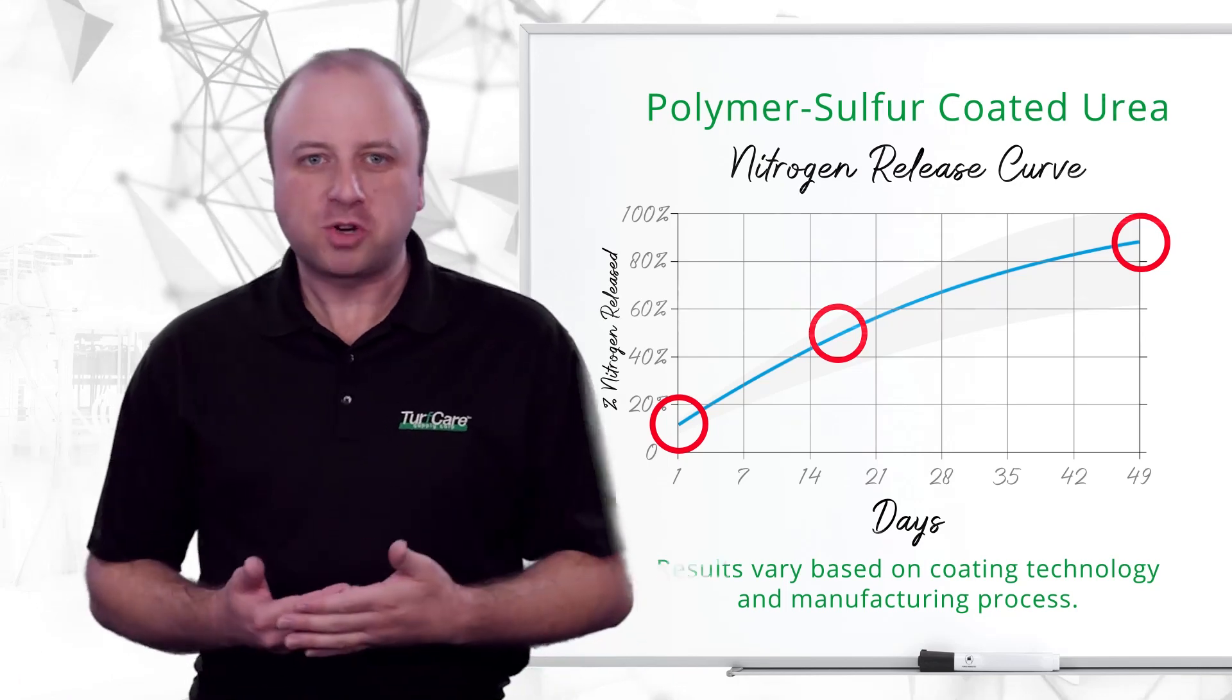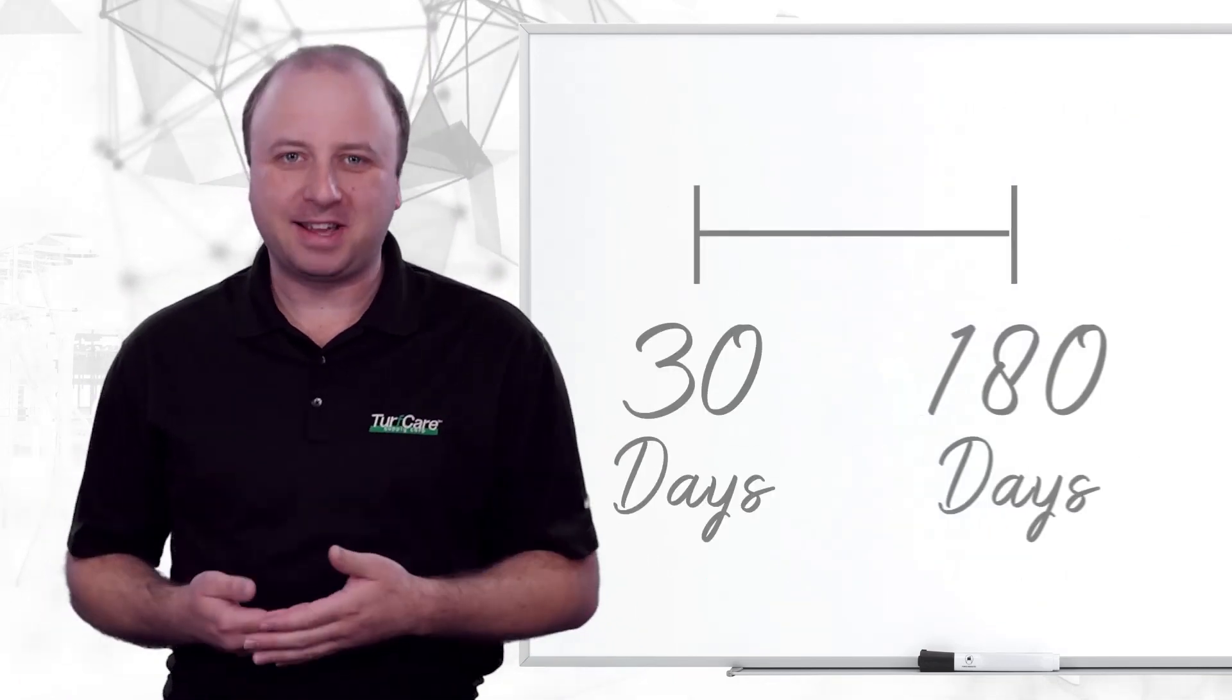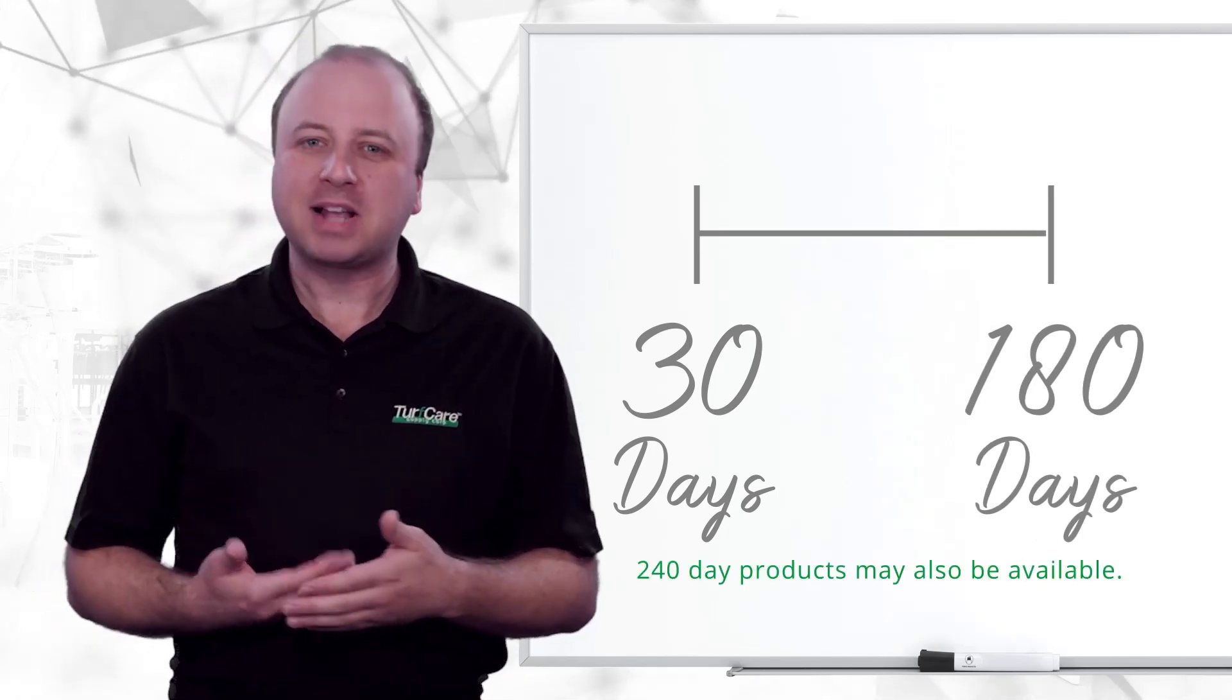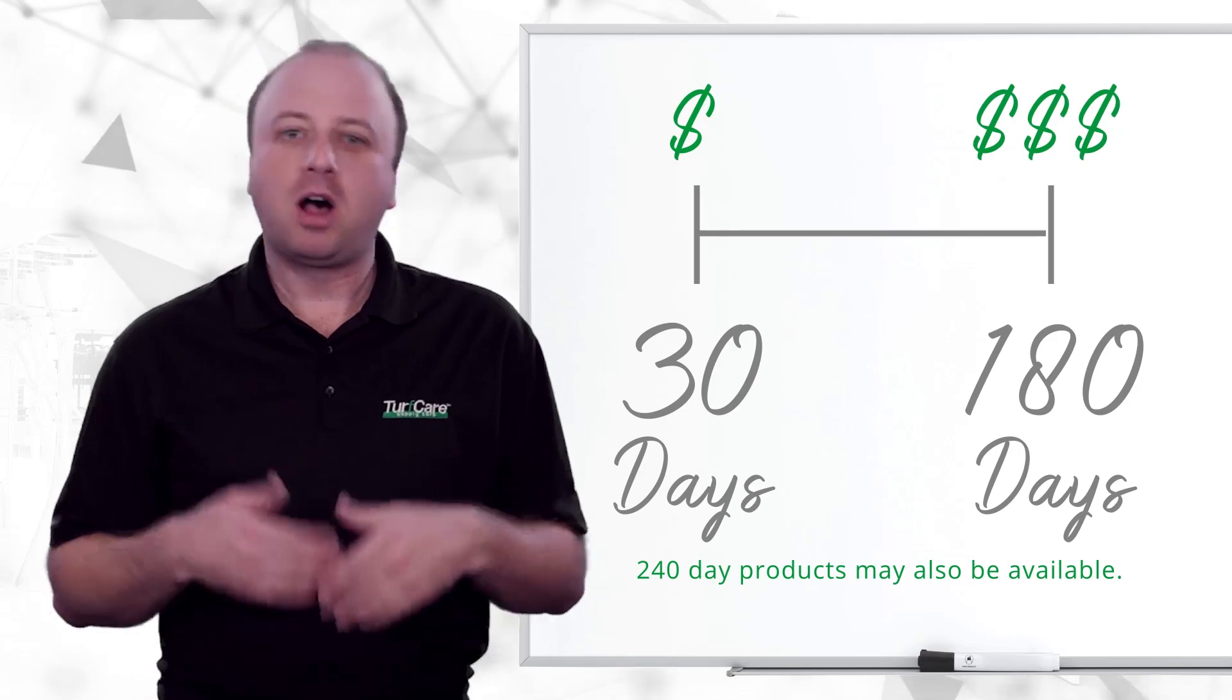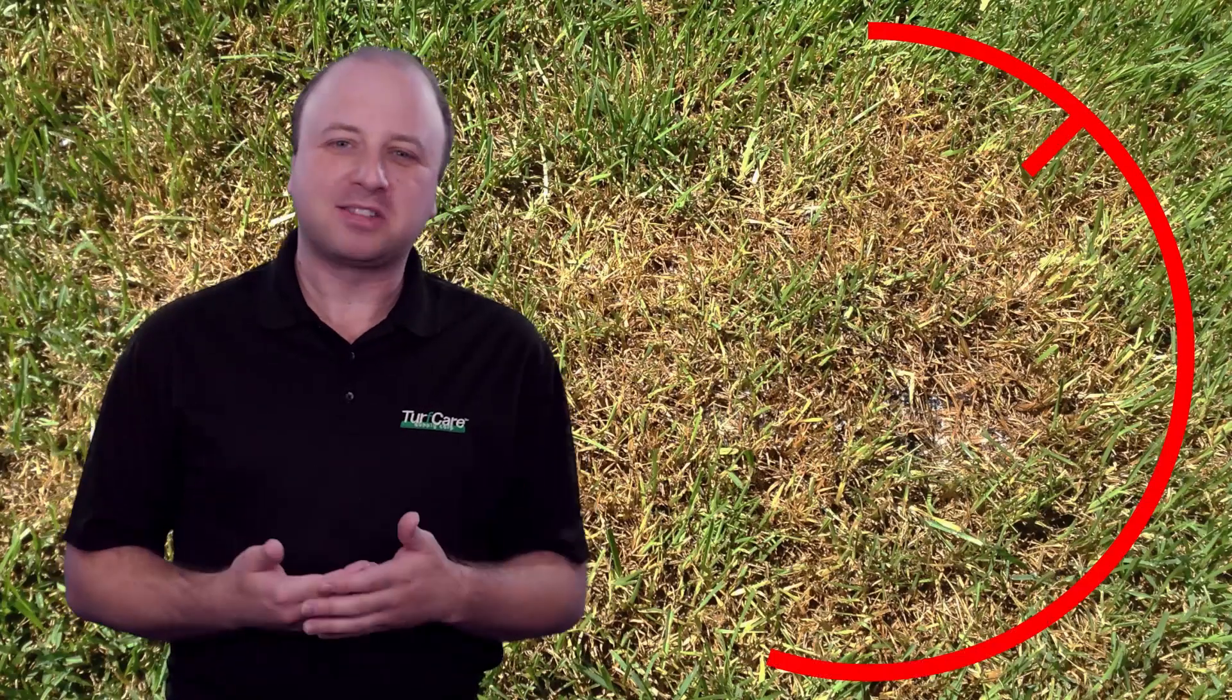Control or slow release nitrogen products can last anywhere from 30 days all the way up to 180 days. Longer lasting products have thicker polymer sulfur and wax layers and not surprisingly are more expensive. One other benefit to slow or controlled release nitrogen products is that they help prevent the chance of burning your turf should you accidentally over apply.